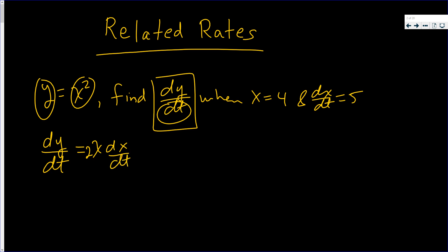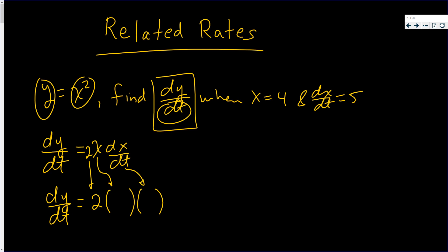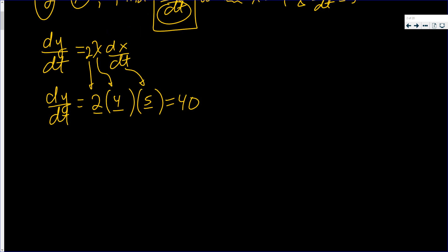What I like about this solution is it already is in the form of dy/dt equals. So all I need to plug in is x and dx/dt. x is 4, dx/dt is 5. 2 times 5 is 10, times 4 is 40. Just take the derivative and plug in the information they give you — that's all you do for these related rate problems.